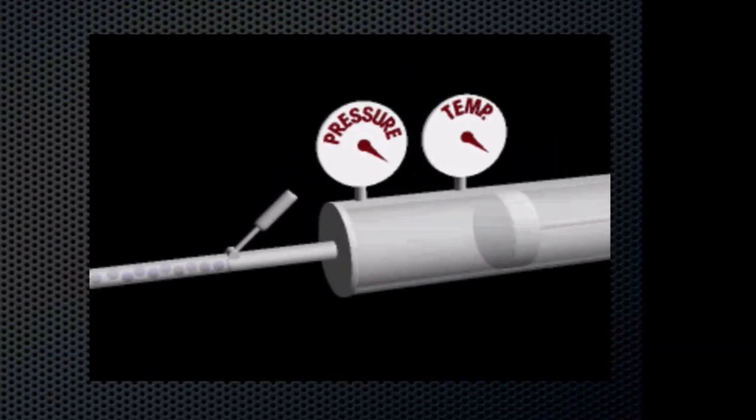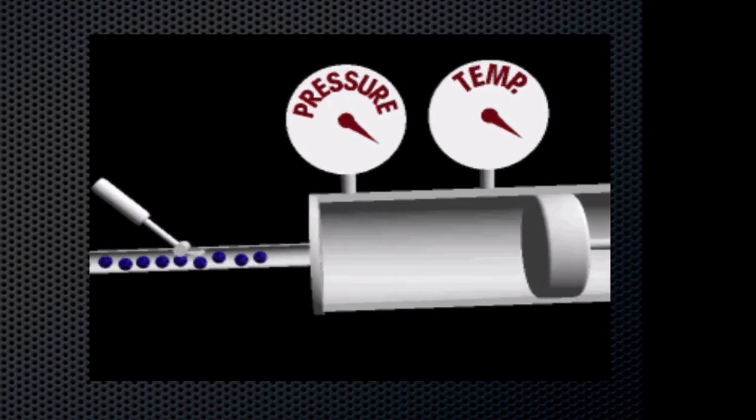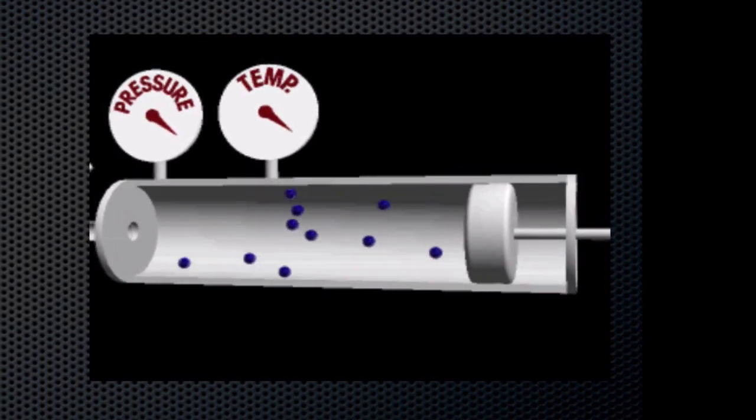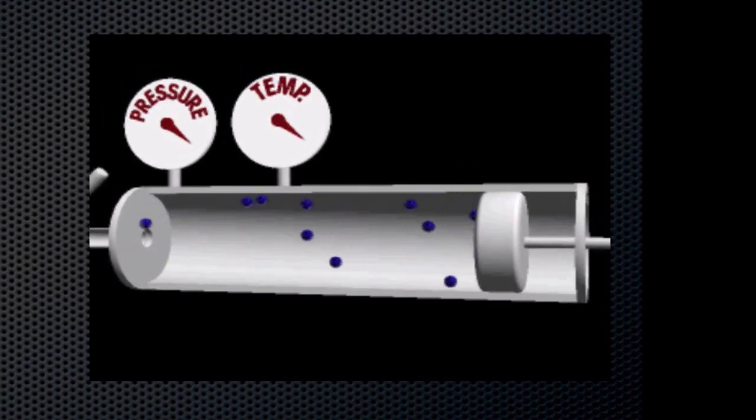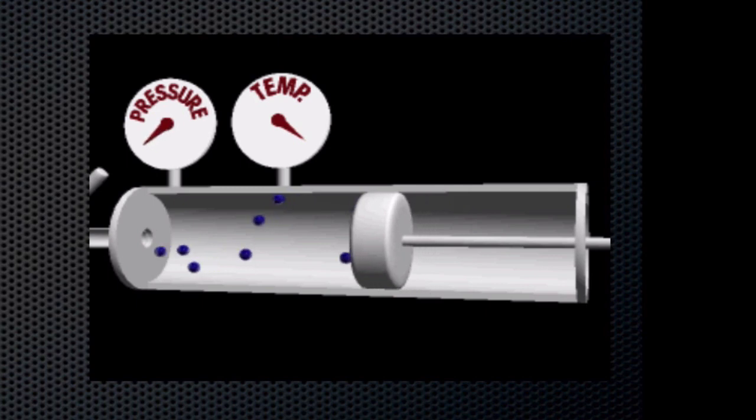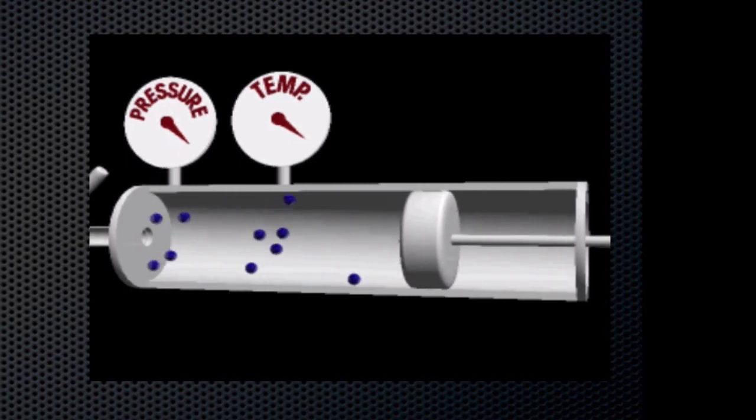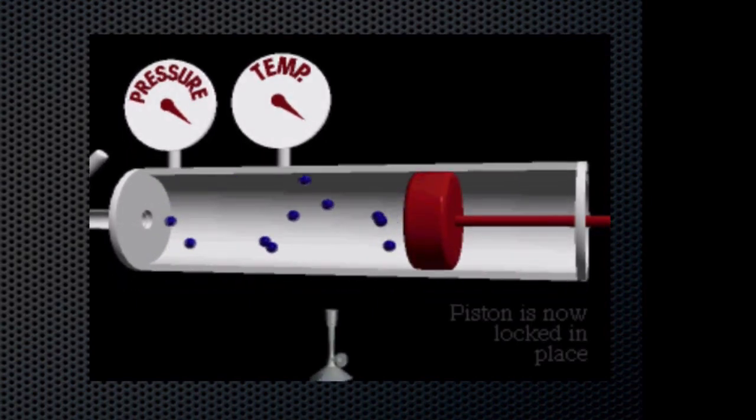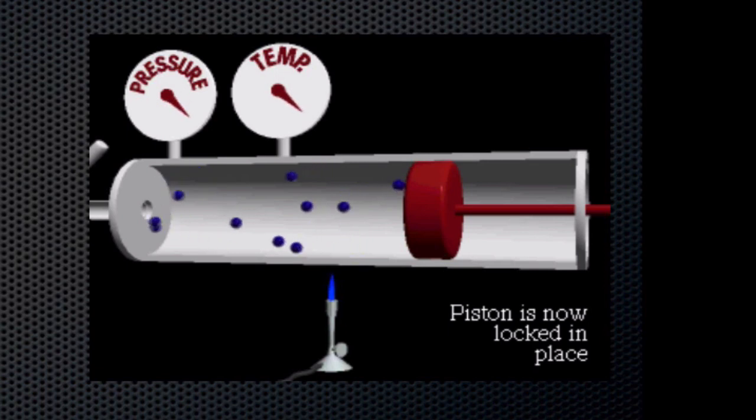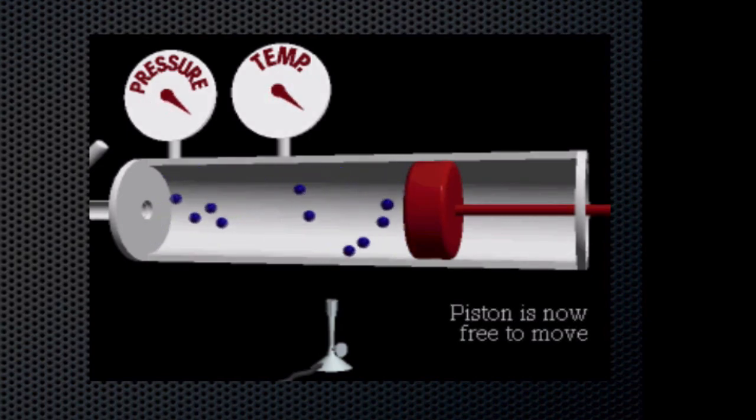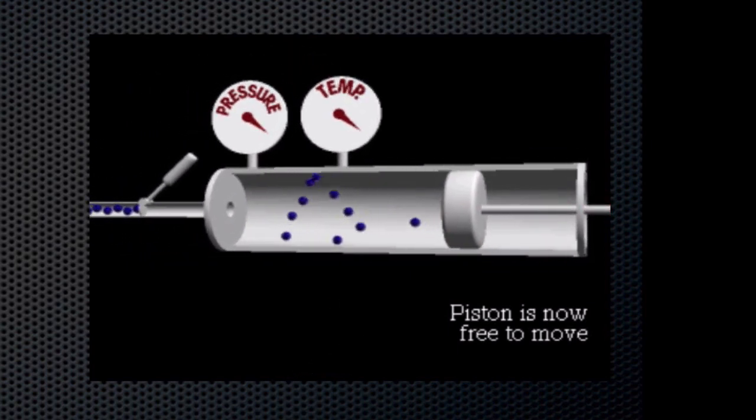The ideal gas law relationship between pressure, temperature, volume, and number of atoms can be demonstrated using a piston. As the volume of the cylinder decreases under constant temperature and number of atoms, the pressure increases due to the increased rate of collisions against the wall of the cylinder. We now lock the piston to create a constant volume and number of atoms. Increasing the temperature results in increased kinetic energy for the atoms. The result is an increase in both temperature and pressure. Removing the heat source allows the kinetic energy of the atoms to dissipate to the surroundings, and the system returns to original conditions.